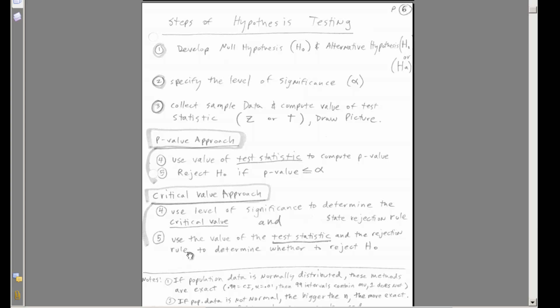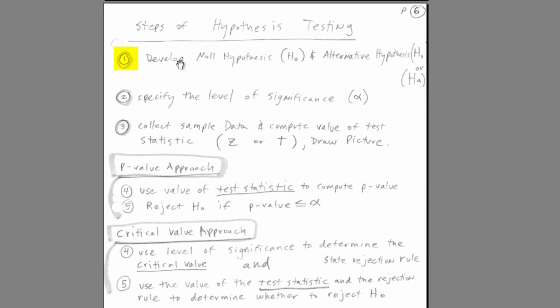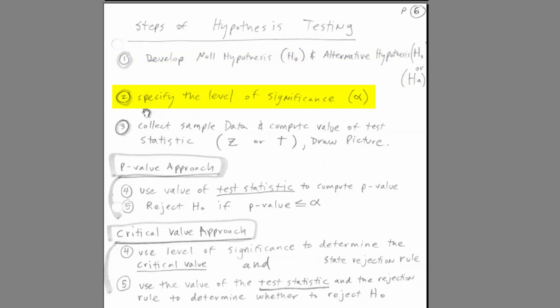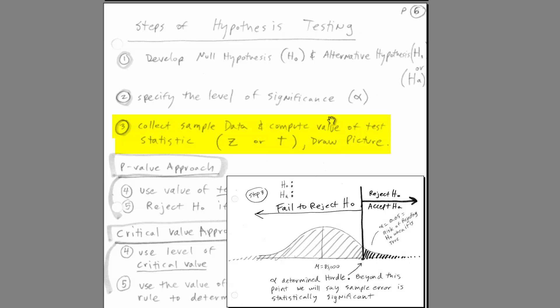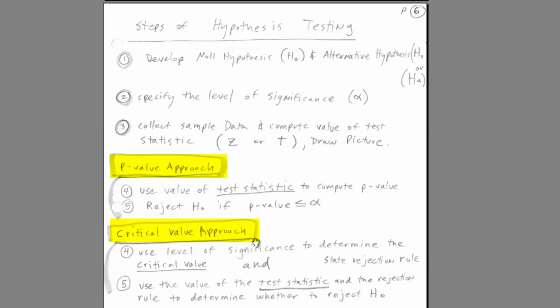There are five steps in hypothesis testing. Step 1: develop the null hypothesis and the alternative hypothesis. Step 2: select our level of significance, alpha. Step 3: collect sample data, compute the test statistic (z or t), and draw a picture. Step 4: there are two approaches that always lead to the same conclusion — the p-value approach and the critical value approach to determine if we're past the hurdle. Let's go over to Excel and look at an example.